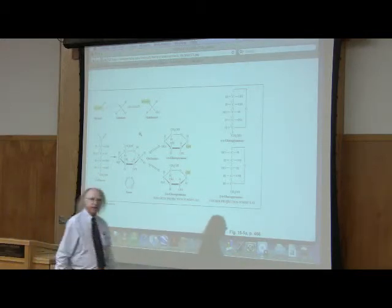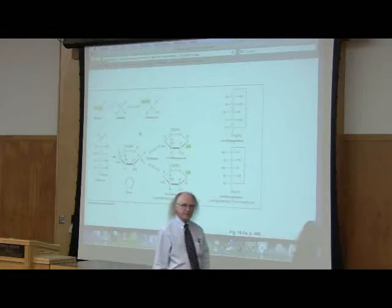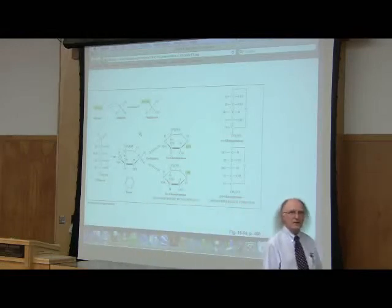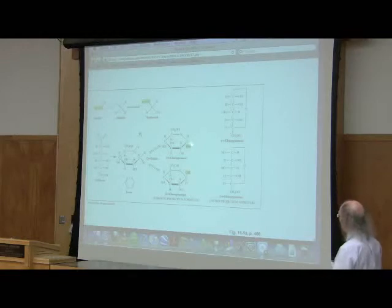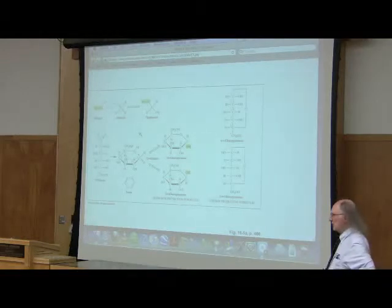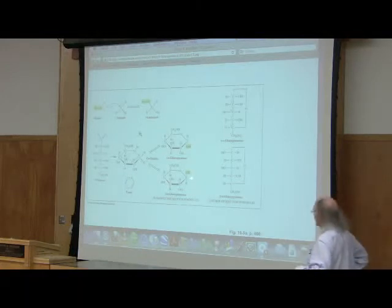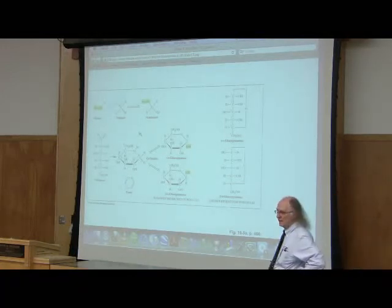The anomeric carbon can have two possible configurations. If the OH is down, it's in the alpha configuration. If it's up, it's in the beta configuration.